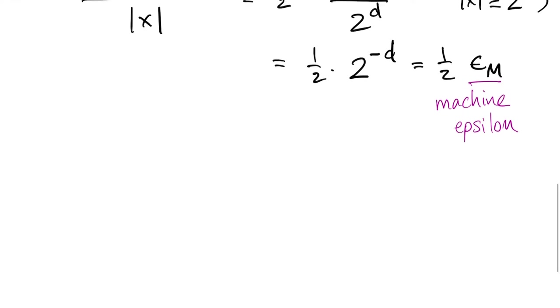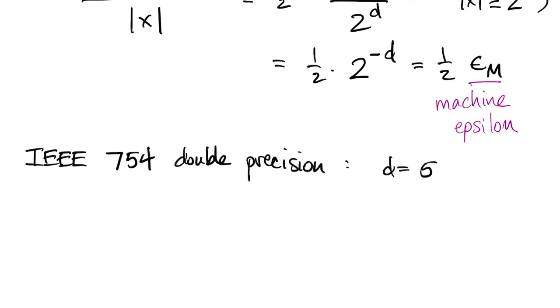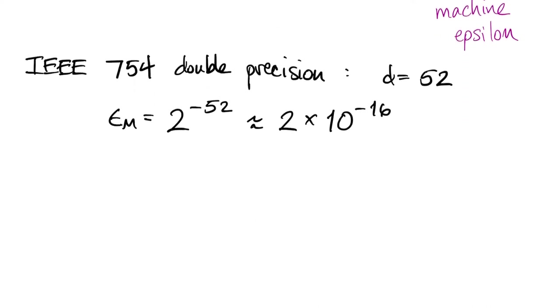Typically, one's using what's called IEEE 754 standard double precision representation. And in that representation, d is equal to 52, so that means that machine epsilon is 2 to the negative 52, which is roughly 10 to the minus 16th.